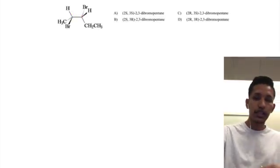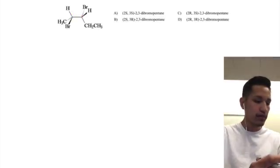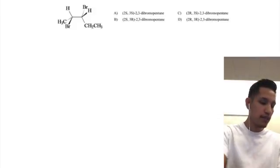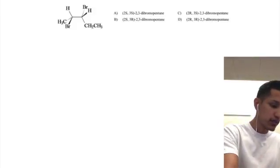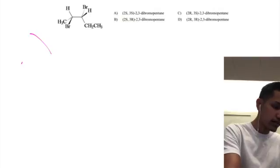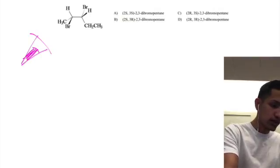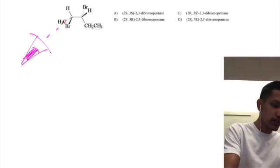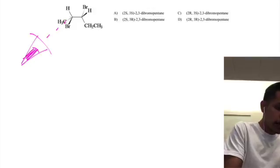The technique I would recommend for this is to imagine as if you were looking at the compound directly when you do your drawings. So here we're going to imagine that we're looking at the second carbon from this position of our eye, and we're going to draw our carbon.